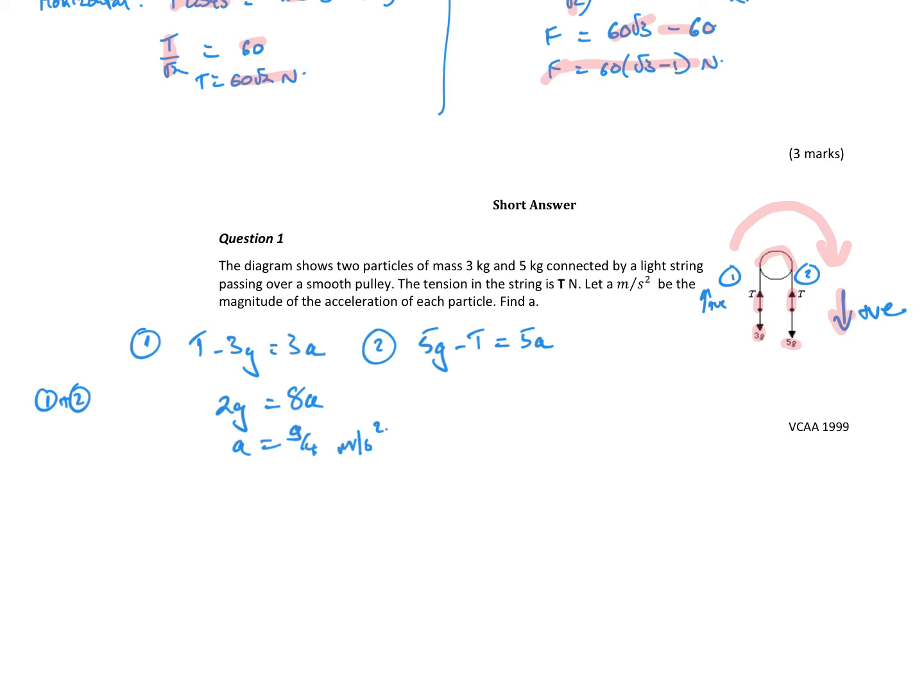Don't forget the sum of the forces equals ma. For the second particle acting down, I've got 5g acting down minus the tension acting up equals 5a. Sum of the forces equals ma, so that's always your starting point. If our particle is stationary, the sum of the forces equals zero. We've added these two equations together, so the T's cancel. I get 5g minus 3g which is 2g equals 3a plus 5a which is 8a, giving my acceleration as g over 4 meters per second squared.